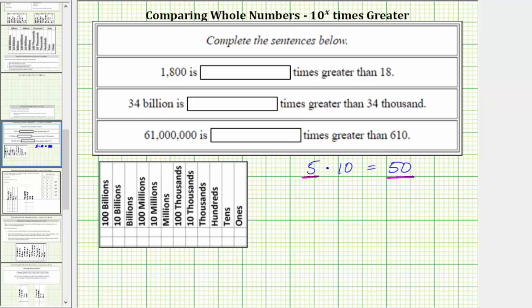If you were asked to determine a number that is a hundred times greater than five, we would multiply five by 100. Five times 100 is equal to 500. This product indicates that 500 is a hundred times greater than five.